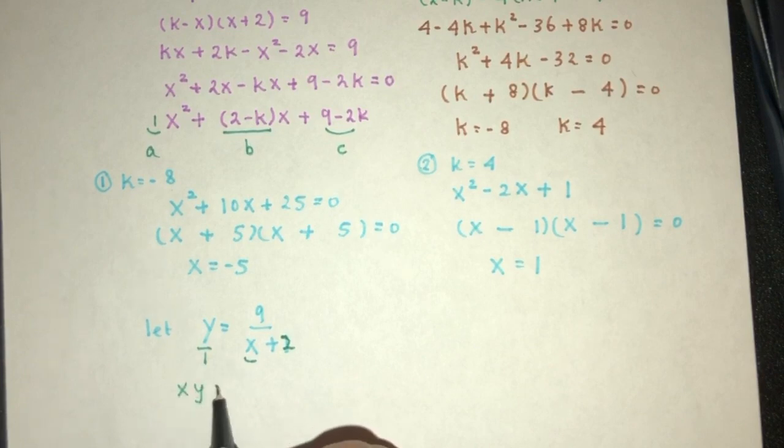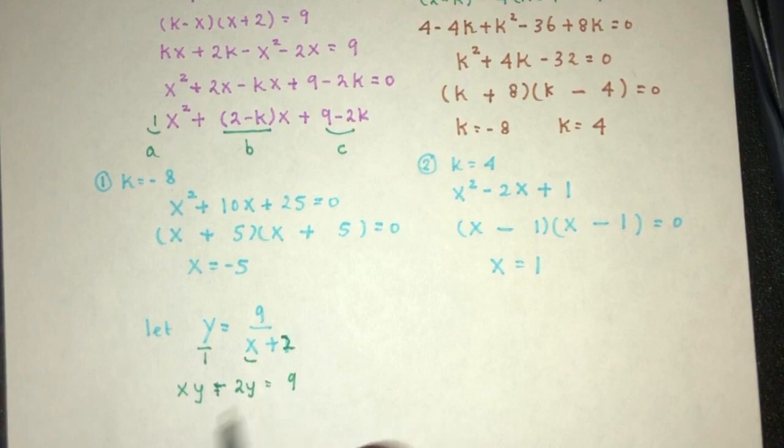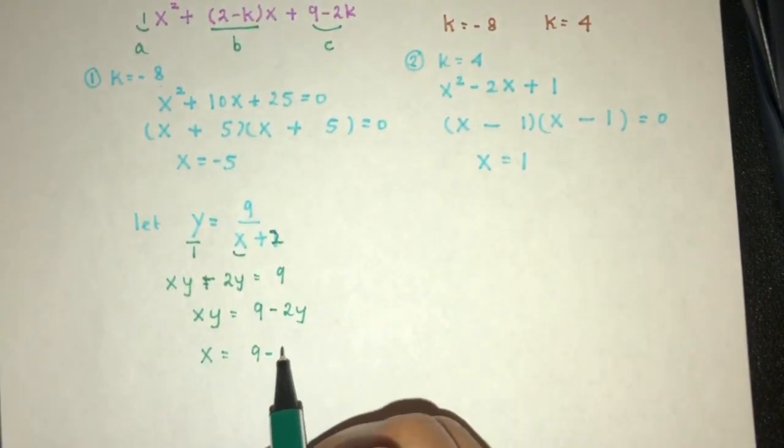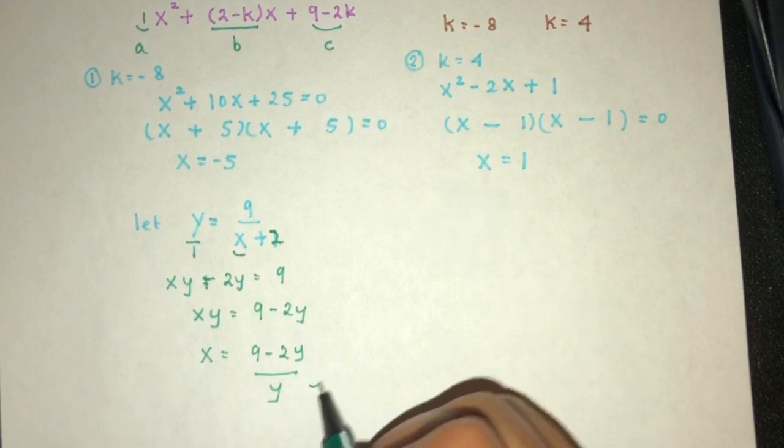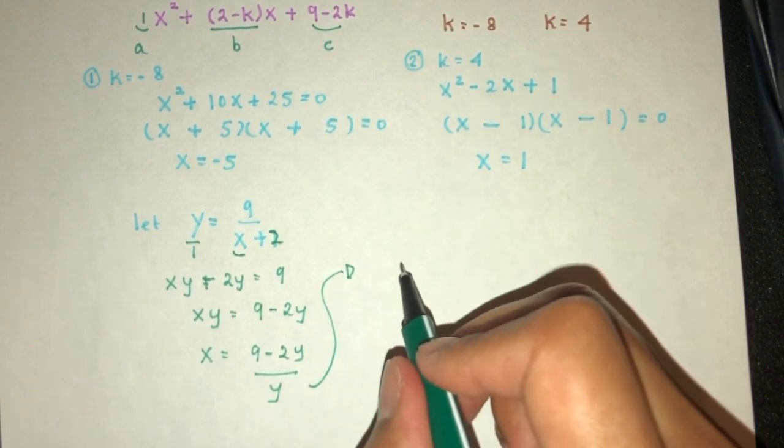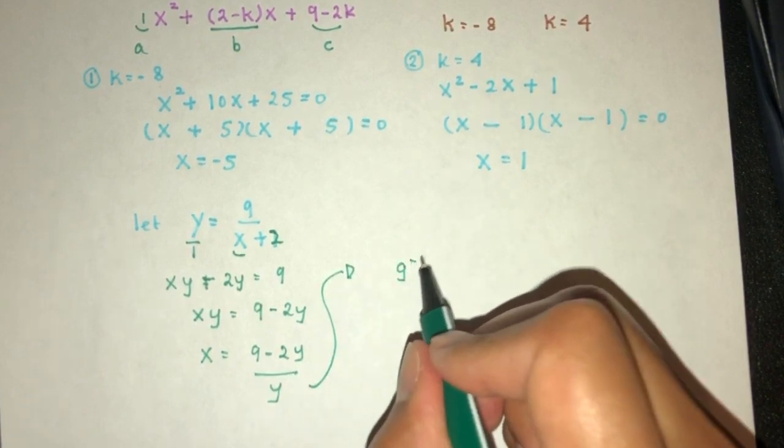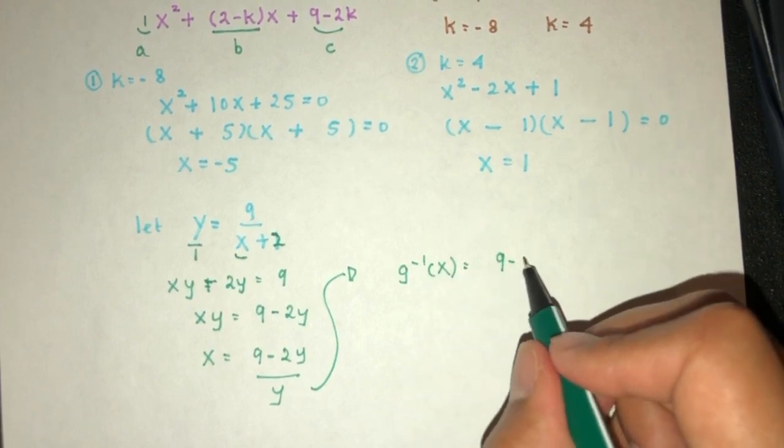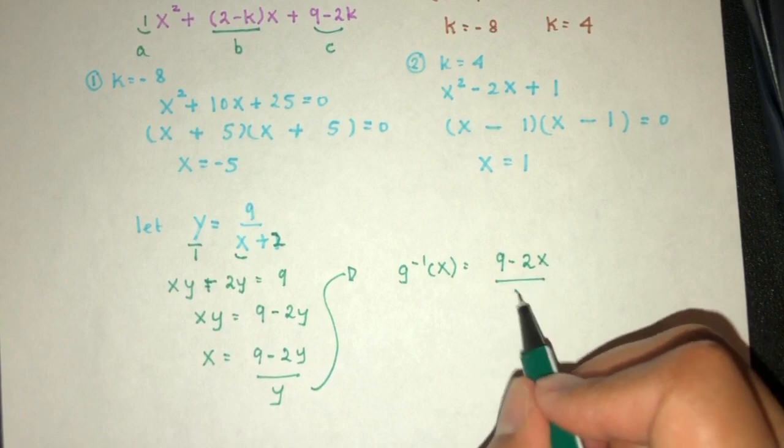You have xy + 2y equal to 9. So xy is equal to 9 - 2y. Now finally, x have to be (9 - 2y) divided by y. Following this, we have to write g inverse. It is in terms of x. That will be (9 - 2x)/x. So that is part 3 of the question.